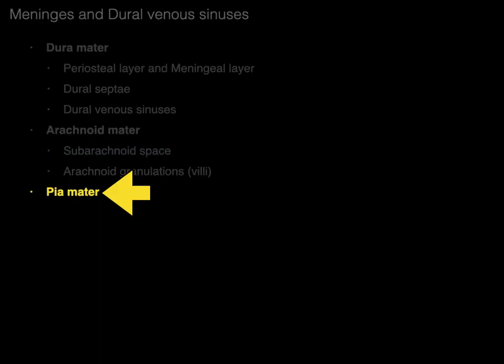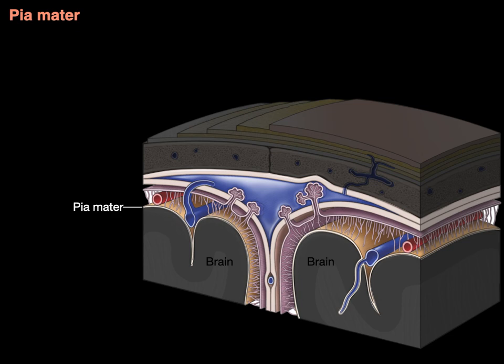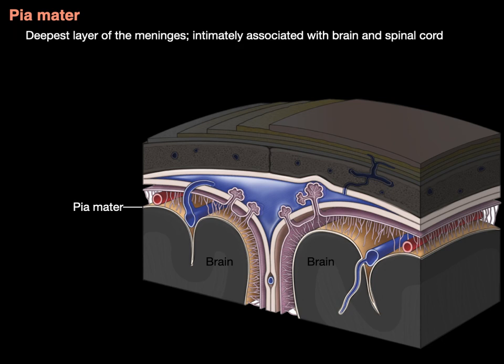Now let's talk about pia mater. Pia is Latin for soft, and mater is mother — it's called soft mother because the pia mater consists of loose connective tissue or areolar connective tissue. It is the deepest layer of the meninges, intimately associated with the brain and spinal cord. We can see it right along the brain, following the contours of the gyri and sulci. The pia mater also surrounds the blood vessels, making a connective tissue sheath as those blood vessels dive into the parenchyma of the brain.